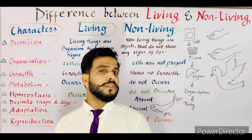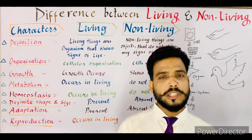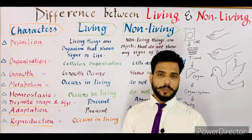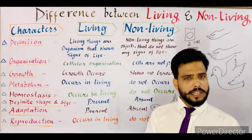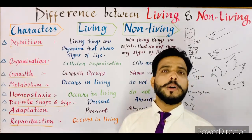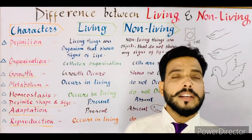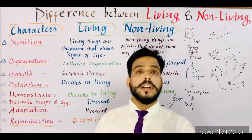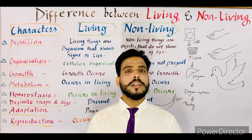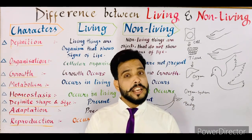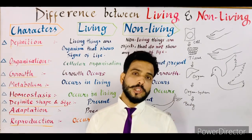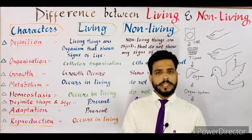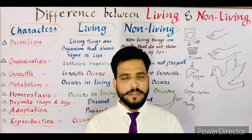That was all about the differences between living and non-living. I think all the things are very clear to you. If you have any confusion or questions, you may ask in the comment section and I will definitely reply. In our next lecture — lecture number three — I'll start binomial nomenclature given by Carolus Linnaeus, which is another important topic for all my 11th students. Thanks for watching and have a good day.